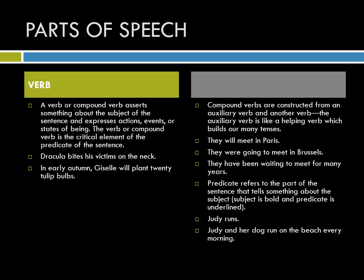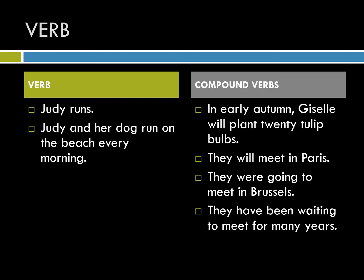I have given you a breakdown of all of the parts of speech as well as examples, so I just want to quickly go over these. For verbs or compound verbs, I've started with quite simple verbs — 'runs.' Verbs are of course action words, or sometimes a state of being, and here we have 'run' again; even though the sentence is much longer, we still have the one verb.